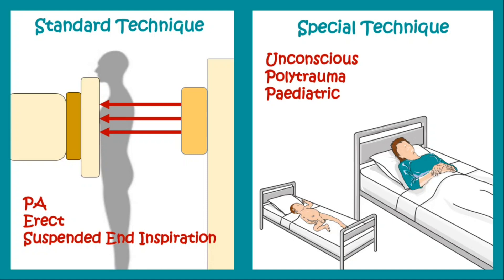Why do we need a suspended end inspiration? So that we can visualize the parts of the lungs and different angles — that is costophrenic and cardiophrenic angles — clearly. But in case of unconscious patients, polytrauma patients, or even pediatric patients, we cannot follow this PA system, so we follow special techniques and click an AP view x-ray. The difference between a PA x-ray and an AP x-ray will be discussed in another video. For this video let us understand how we interpret a standard PA erect suspended end inspiration chest x-ray.